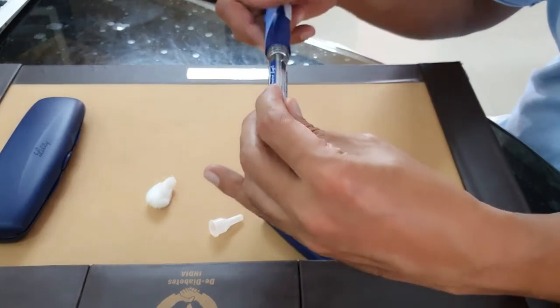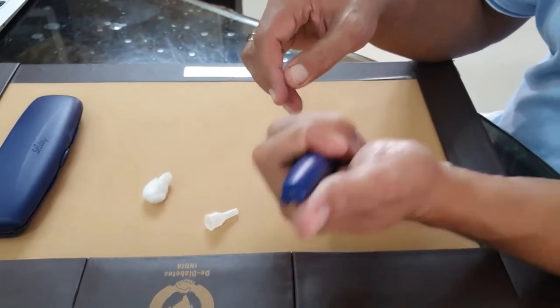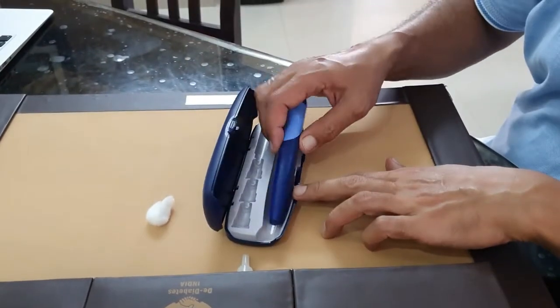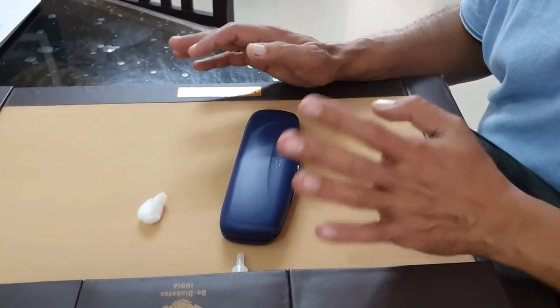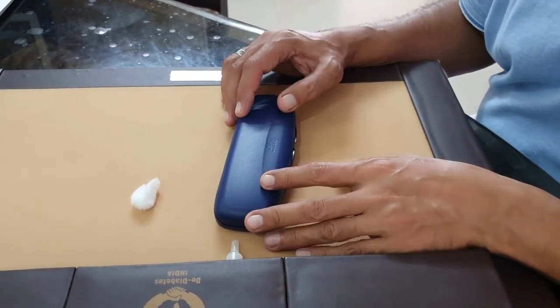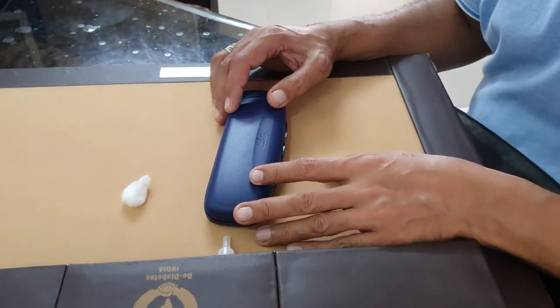After injecting, always keep it safe. Put the cap on. Either you can carry it like this or you can put it in a box like this. You need not keep it in the refrigerator because it is stable at room temperature for one month.